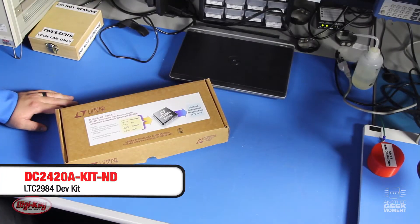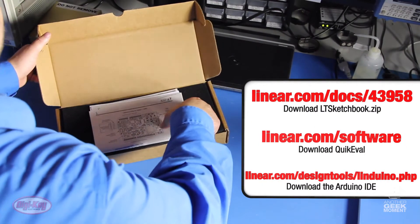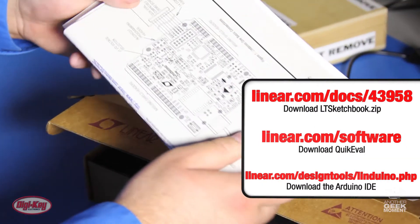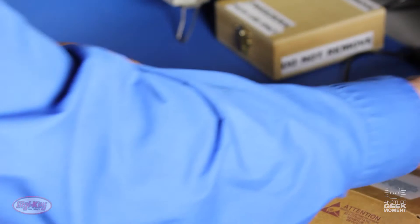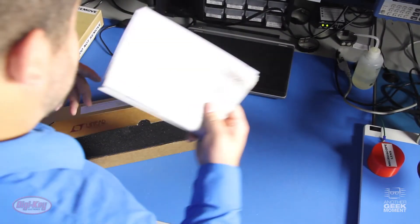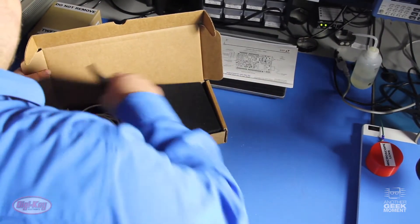Let's see what you get when you order the DC 2420A kit. First you will see the data sheet and manual for the kit. Linear technology gives you links in the manual to download the software. They made it very easy.